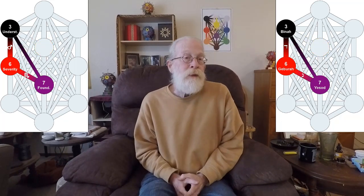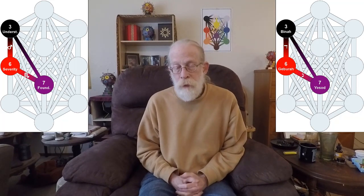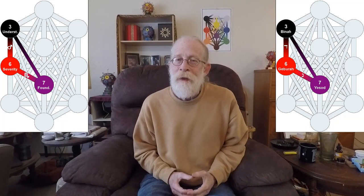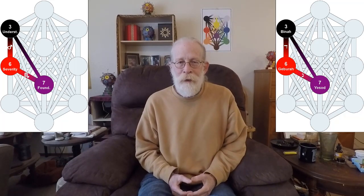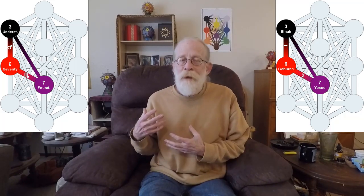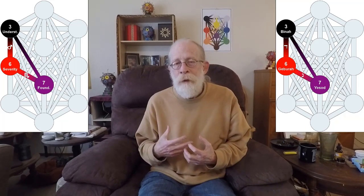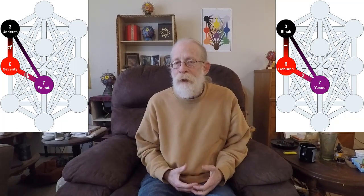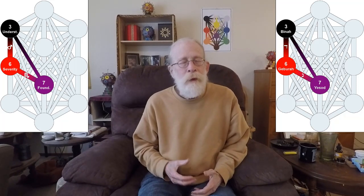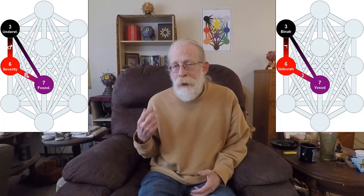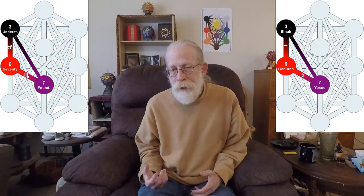Now, the third gate is the last triangle, and this is where we integrate Nun with Binah. So, we start in Gebura, follow Nun down to Yassad, and then take that hidden path directly up to Binah. And then Deleth down to Gebura, and then back around.